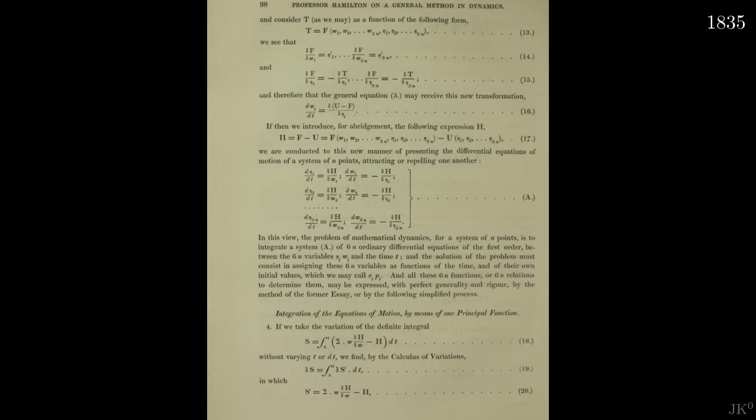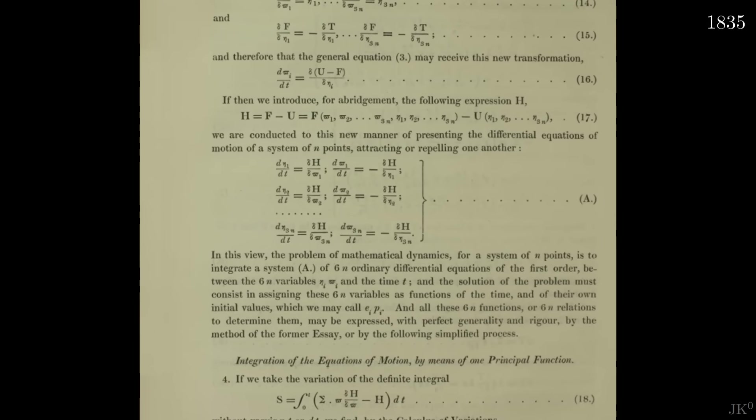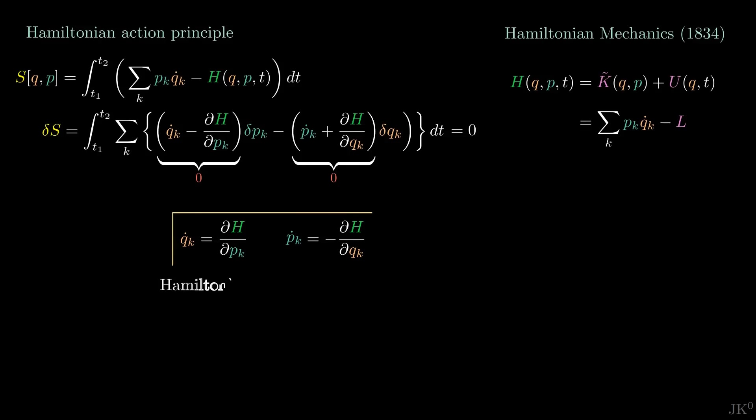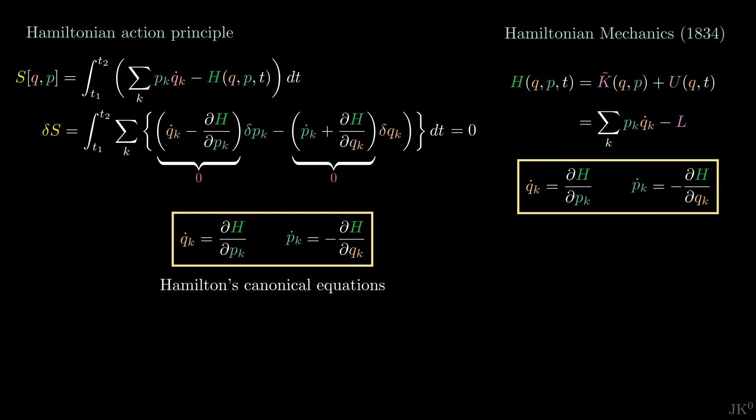In his paper, Hamilton does not use indices, so he explicitly writes these two equations for each degree of freedom in the system, and refers to them as the differential equations of motion of a system of endpoints attracting or repelling one another. These equations should not be a surprise to us. These are exactly the equations for the time evolution of q and p found earlier. But this result confirms the self-consistency of Hamilton's formalism and that his equations of motion are indeed obtained from the action principle.